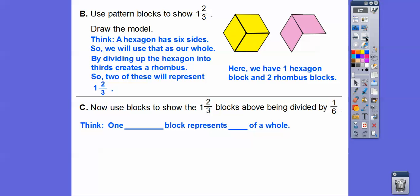All right, so now we're going to use the blocks to show 1 and 2/3 blocks above being divided by 1/6. So think, 1 block represents, so it looks like these triangles represents a whole right there. So if we cut it up into 6ths, then we just go right down the middle, right down the middle, and right down the middle, and it makes these little triangles right here. So 1 triangle represents 1/6 of that whole right there.